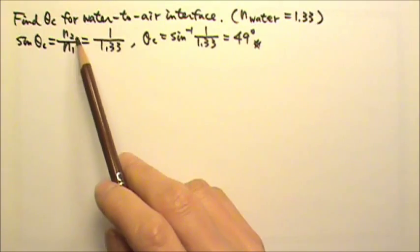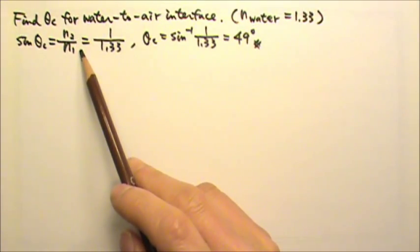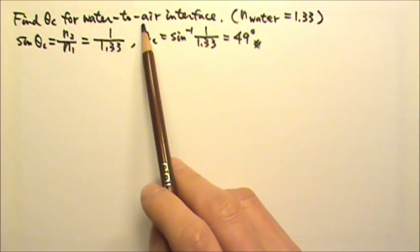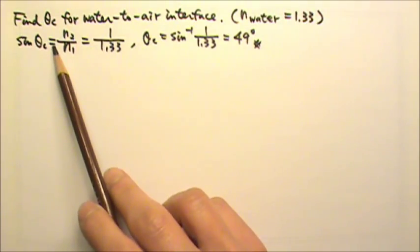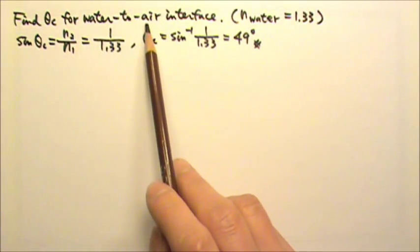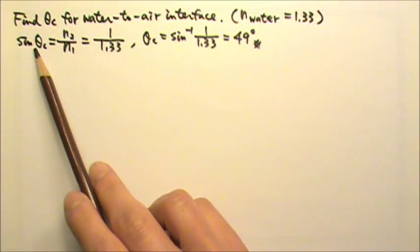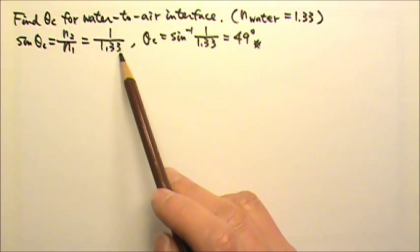Just in case you're not sure whether this is n2 over n1 or n1 over n2, you can check to see whether light is going from a slower medium to a faster medium. If it is, then there is a critical angle. This is water to air, so yes, there is a critical angle. Since sine value can never be bigger than 1, this has to be the smaller n over the bigger n.